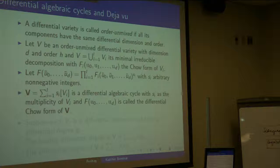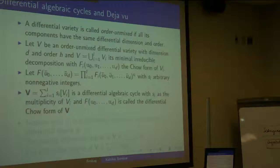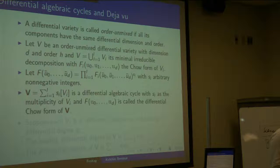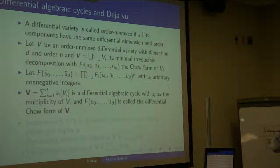There's a question about whether the Chow form F is computable from the defining equations of V, including with the multiplicities.